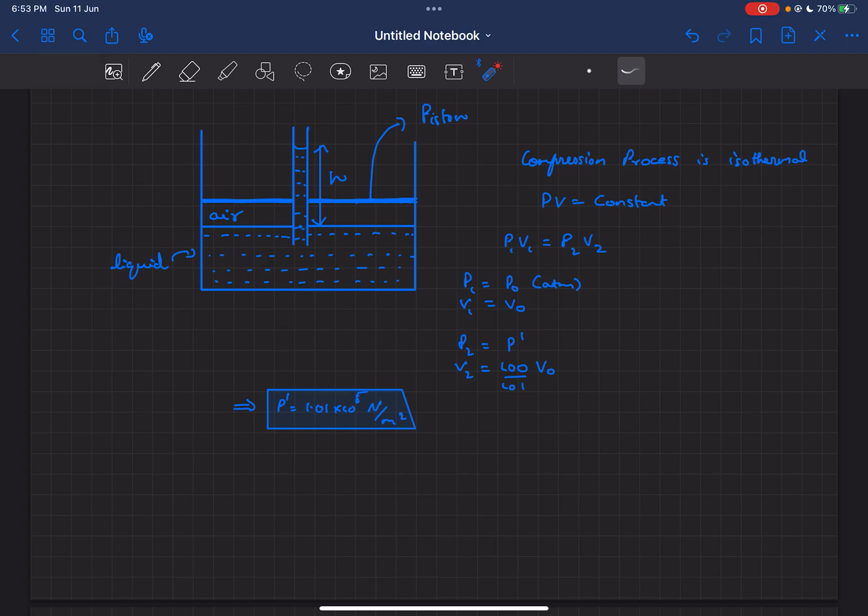In this problem we have a container with an incompressible liquid and an air column. On top is a weightless piston which can be used to compress or expand the air column. Inside we also have a tube whose radius is pretty small, 0.1 millimeter, so it's a capillary tube.